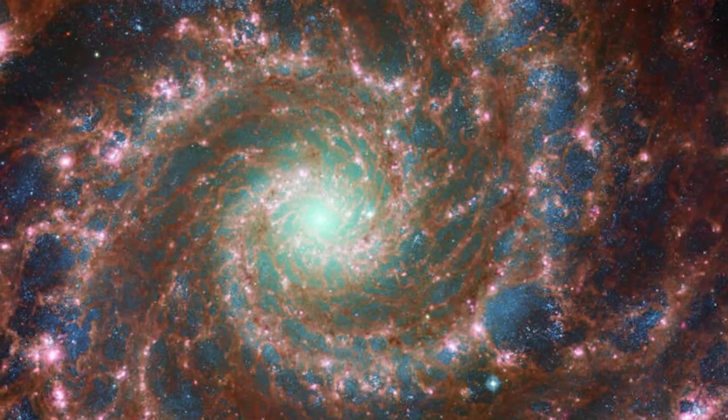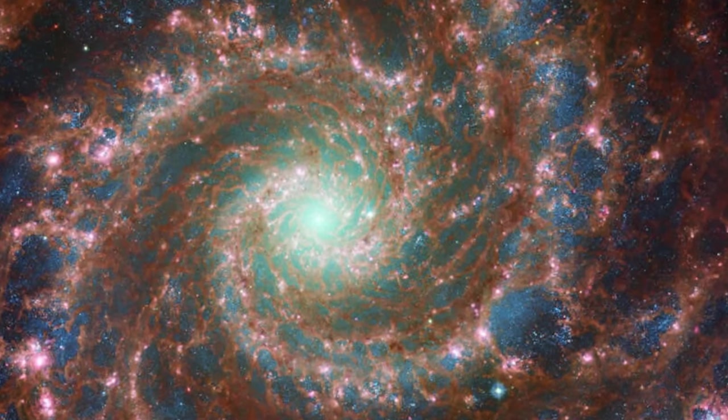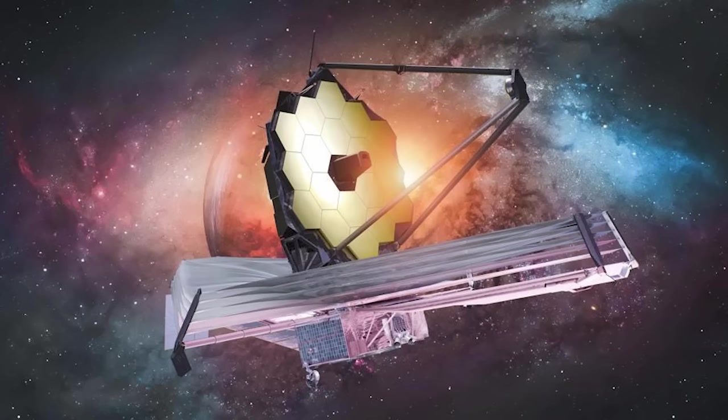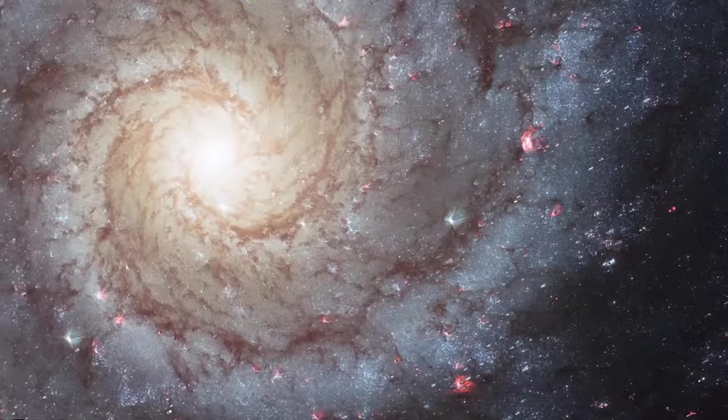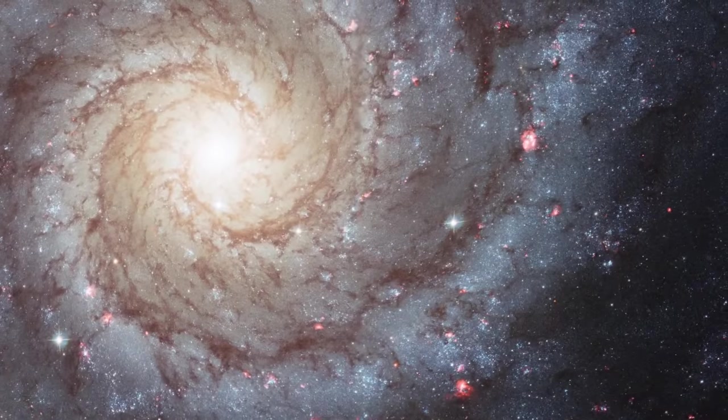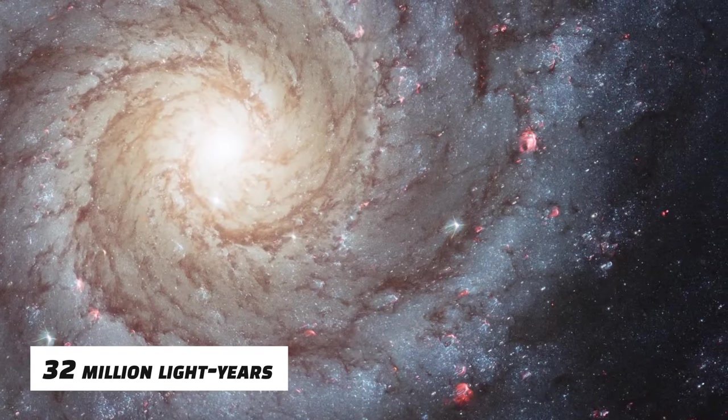M74, a spiral galaxy, is at its brightest in this view, which combines data from the Webb and Hubble telescopes. This galaxy is located approximately 32 million light-years distant.